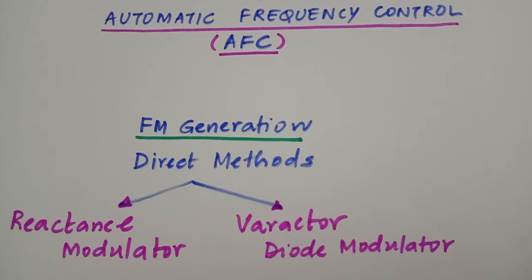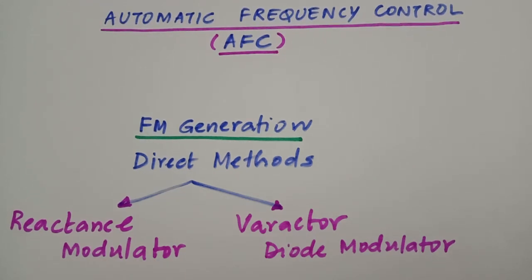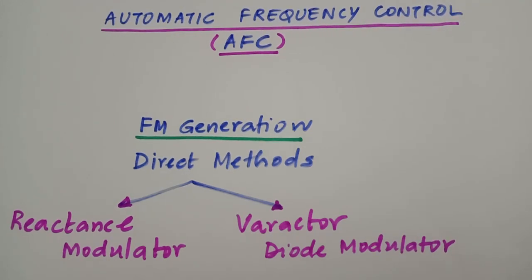The first one was the reactance modulator circuit for generating FM, and the other was the varactor diode modulator. If we look into the reactance modulator circuit, we know that this modulator circuit is used along with a Hartley or a Clapp oscillator — we connect it across the tank circuit. The disadvantage of this circuit is that since we are using LC oscillators as the master oscillators, these FM modulators are not quite stable.